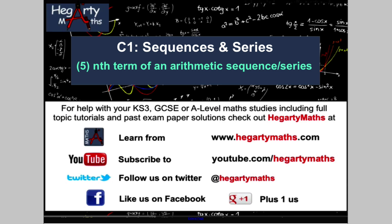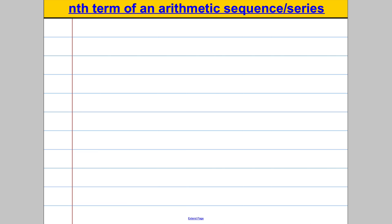First thing I'd like you to do is actually do something. Do you remember how to work out the nth term of an arithmetic sequence or series? Just to be clear, I'm not asking for the sum to n terms — I just want the formula that identifies the nth term, the number that is in the nth position. Do you remember from video 4? If so, try and write it down. The formula is: un, the nth term, is equal to a, the first term, plus n subtract 1 multiplied by d, the common difference.